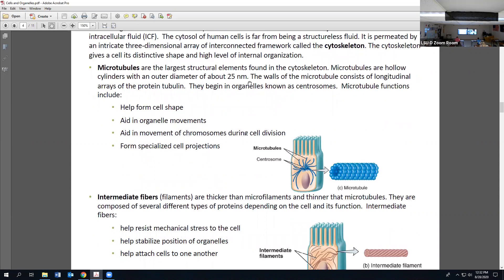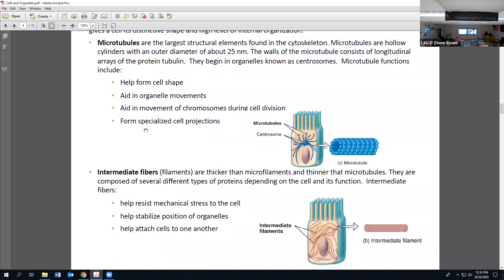That's what we call cytoplasm. Cytoplasm is the fluid plus the organelles; the fluid itself is just cytosol. You'll probably hear me use these interchangeably, but technically they're not the same. The cytosol is far from being structureless because there's a very intricate three-dimensional array of proteins, what we call the cytoskeleton. The prefix cyto means cell, so this is the cell's skeleton that gives our cells their very distinctive shape and helps organize those organelles.